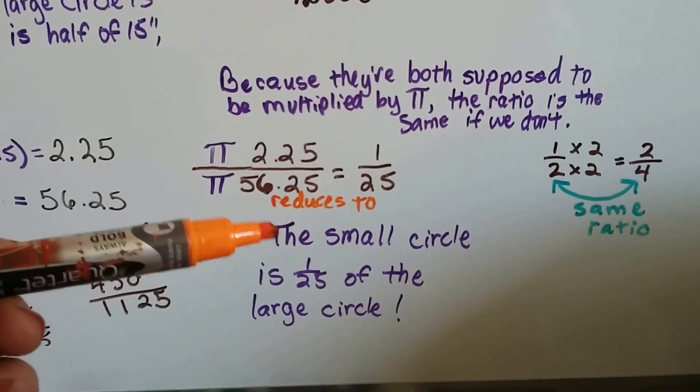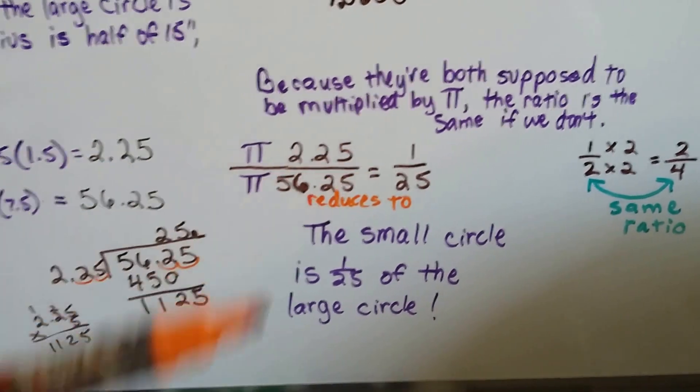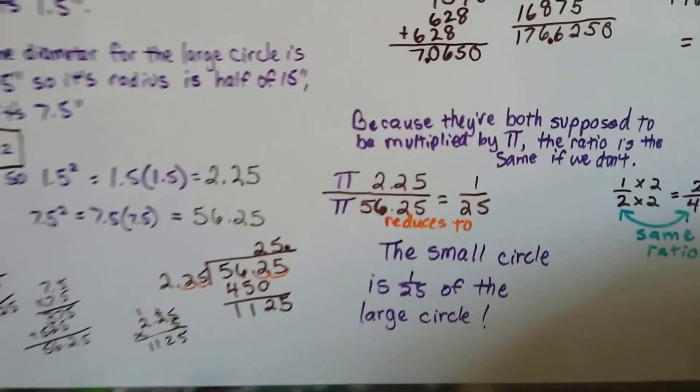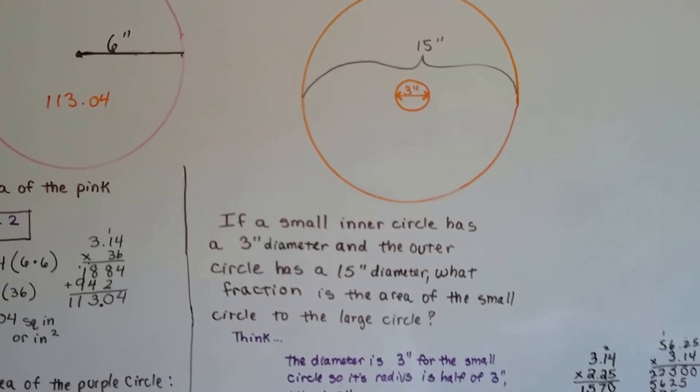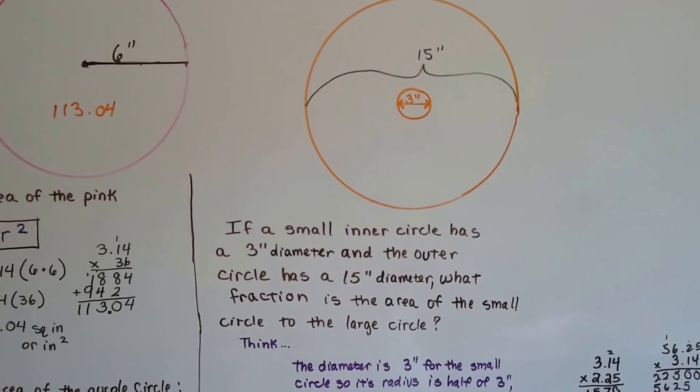So we now know that the little circle is 1 to 25 of the larger circle. That means you could fit 25 of these little guys inside of that circle. Now that makes more sense than just 5.